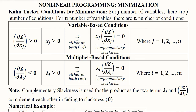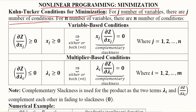After doing the nonlinear programming for maximization, now we can do it for minimization. We should first understand the Kuhn-Tucker conditions for minimization and then apply them to an economic situation. We can assume any general number of variables, and the number of conditions will equal that number. The first set of conditions would be variable-based and the other multiplier-based, as we have already seen in the maximization application.